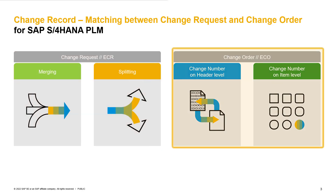Once we fulfill the change request phase and want to continue with change execution, we need to have at least one change number available on our change record. This change number can be automatically generated at change record header level as well as on each single change item. The generation of this change number is maintained per status. So for the header change number, you can, for example, maintain in customizing: on user status E5, please generate a change number and attach it to the header.